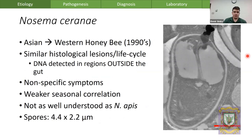Nosema ceranae crossed over from the Asian to the western honeybee sometime in the 1990s. It has very similar histological lesions — in fact we can't tell the difference between what is infecting the ventriculus based on histology alone. Their life cycle appears similar. There has been some research finding DNA of Nosema ceranae outside the ventriculus, however we haven't correlated that with histological findings yet.